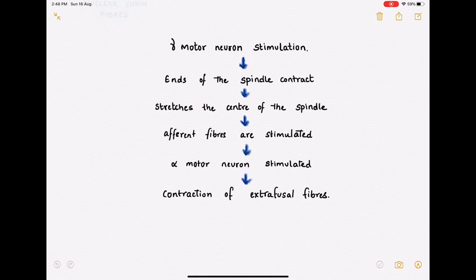This stimulates the sensory fibers innervating the spindle which, as already mentioned, terminates on the alpha motor neurons. Thus, as a consequence of alpha motor neuron stimulation, there is contraction of the extrafusal fibers and thus the entire muscle. So this means that the extrafusal fibers can be contracted either by direct alpha motor neuron stimulation or indirectly by gamma motor neuron stimulation.